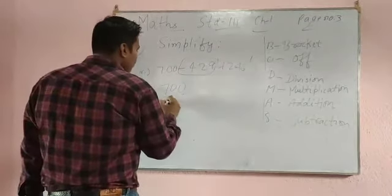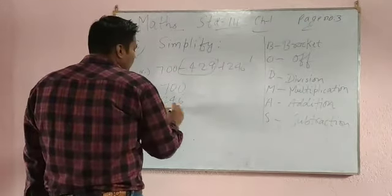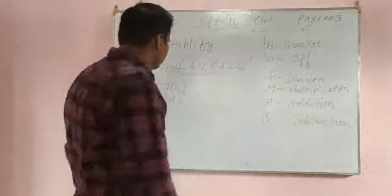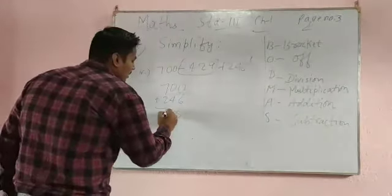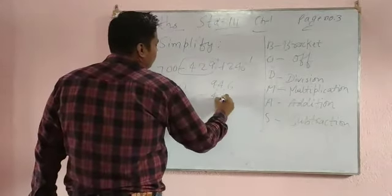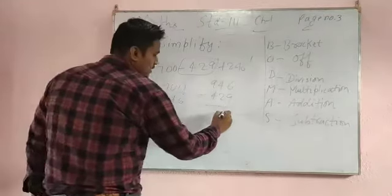Add it - 6, 4, 9. Then whatever will come, 946, we have to subtract 429. Then 6 minus 9 becomes 16 minus 9 is 7. 4 minus 2 is 2. 9 minus 4 is 5. So 527 is the answer.